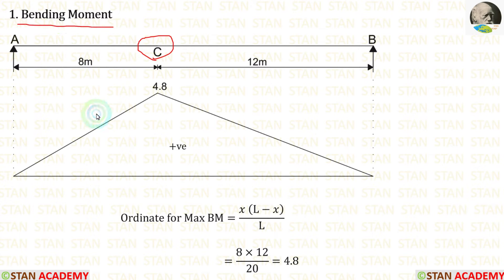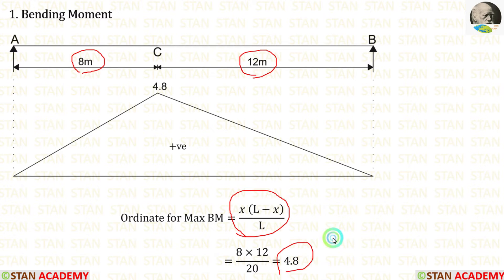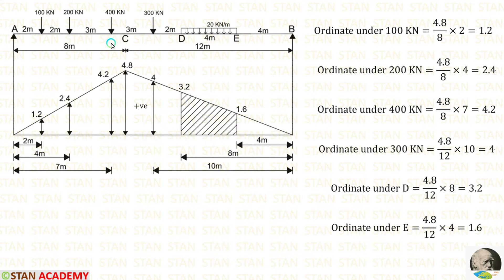First, let us calculate the bending moment. We know the formula for the ordinate for bending moment is x × (l − x) / l. Here, x is equal to 8 m and l − x is equal to 12 m, giving us an ordinate of 4.8. The 100 kN point load is placed at 2 m from the left side, as asked in the question. Now let us calculate the ordinate: for 8 m it is 4.8, but we want the ordinate for 2 m.